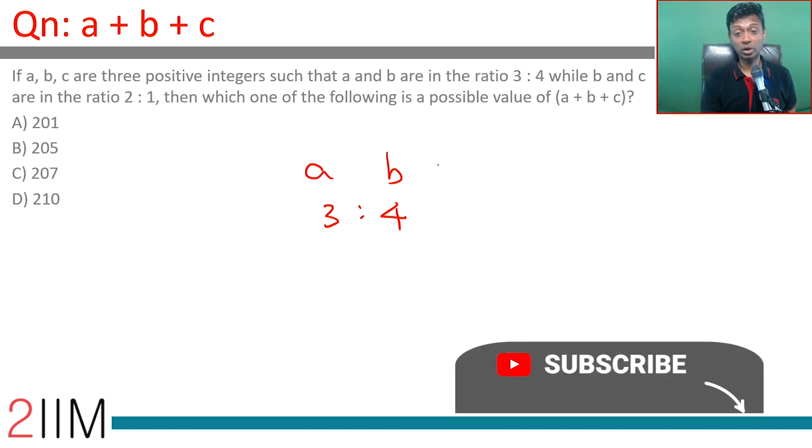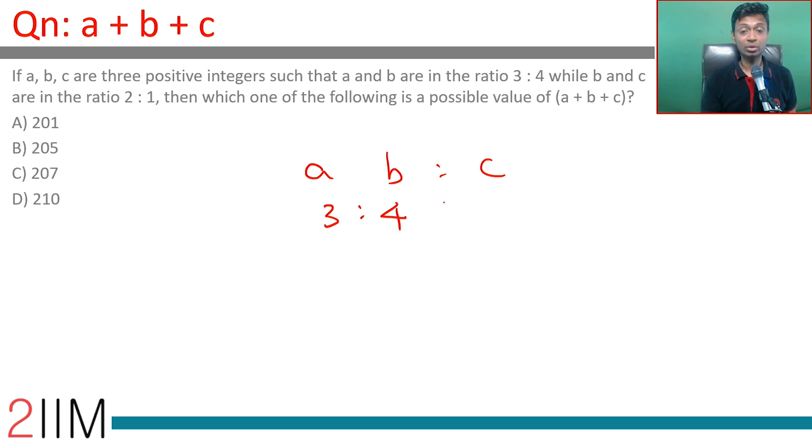b and c are in the ratio 2:1. Combining the ratios, we have 3:4 and 2:1, which is nothing but 3:4:2.